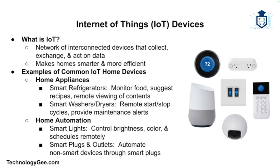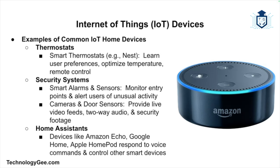Finally, let's dive into Internet of Things devices. IoT refers to a network of interconnected devices that collect, exchange, and act on data. Common home IoT examples include smart refrigerators that monitor food inventory and suggest recipes, and smart washers and dryers that allow remote start/stop and provide maintenance alerts. Home automation devices include smart lights that enable users to control brightness, color, and scheduling remotely, as well as smart plugs that allow device control through automation. Smart thermostats like Nest learn user schedules and optimize temperature for comfort and energy efficiency.